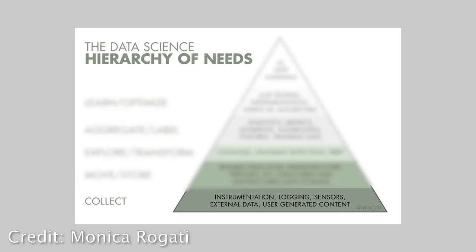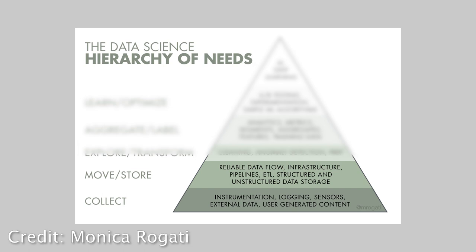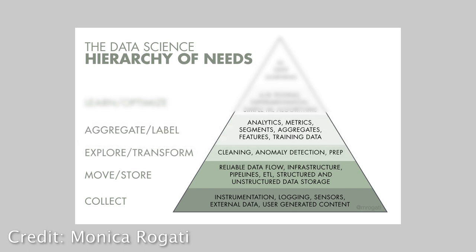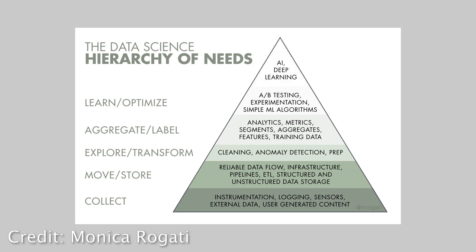Basically, what the data science hierarchy of needs means is that you have to build your data from the bottom up. Everybody talks about the fancy parts of artificial intelligence and machine learning, but in reality those are at the very top of the pyramid. You want to start from the very bottom — collecting data reliably, gathering data from different sources into one pool, building your first analytics and metrics, creating segmentations, and then moving forward with simple machine learning algorithms or A/B testing — all the way to the top with machine learning and AI.